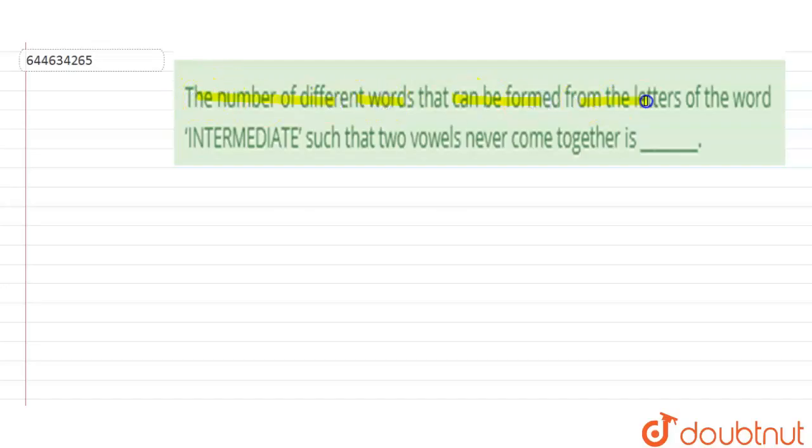...words that can be formed from the letters of the word INTERMEDIATE such that two vowels never come together. So we have word INTERMEDIATE: I-N-T-E-R-M-E-D-I-A-T-E. Let us see which are repeating.